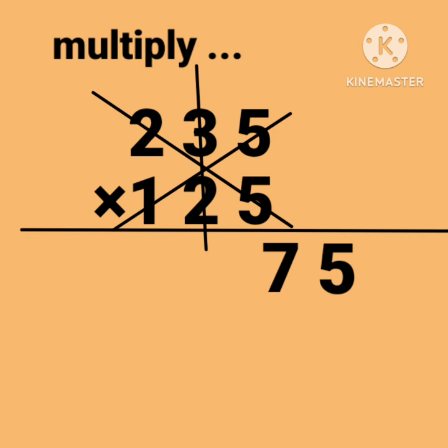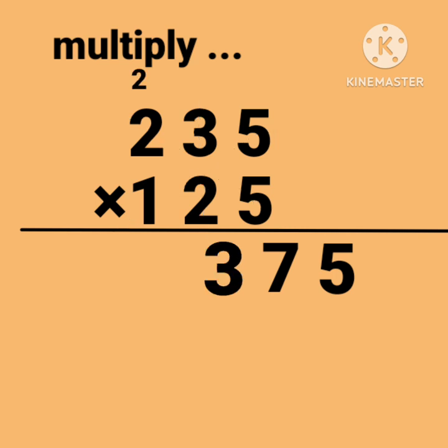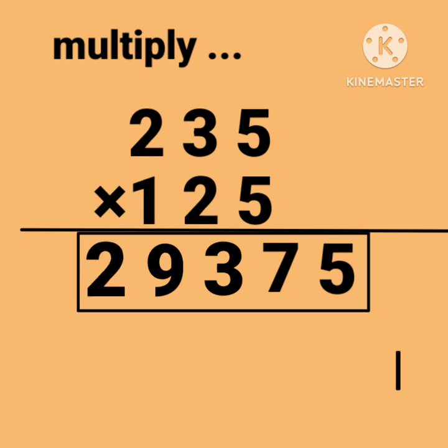Write 23's 3, carry 2. Now cross multiply 3 × 1 and 2 × 2, add carry 2, we get 9. At last, multiply 2 × 1, we get 2. Finally, the answer is 29,375.